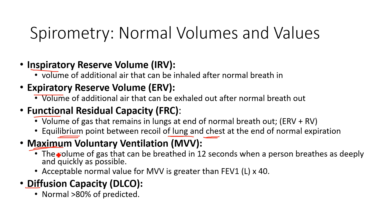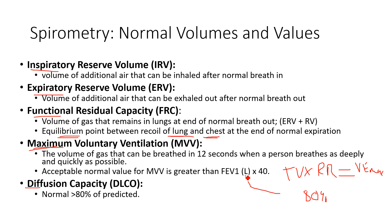Maximal voluntary ventilation (MVV) is the total amount of air you can move in 12 seconds of maximal breathing. This is done typically before a cardiopulmonary exercise test. During exercise, your peak minute ventilation — tidal volume times respiratory rate — should never exceed more than 80% of your MVV at maximal intensity. If someone is reaching 85% of their MVV, they're dipping into their reserve, which is not a good sign and may indicate some ventilatory inefficiency.